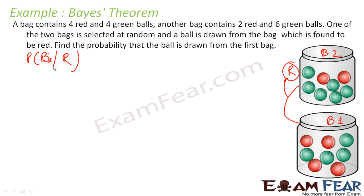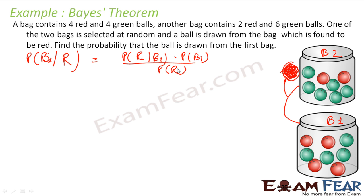Given it is red, I have to find that it is drawn from the first bag. I have to find the probability of the ball coming from bag 1, given that the ball found is red. So I topple this: probability of bag 1 given red equals probability of red given bag 1, multiplied by probability of bag 1, divided by probability of red. Probability of red given bag 1: bag 1 has 4 red balls out of 8 total balls, so it is 4 by 8. Probability of selecting bag 1 is 1 by 2.